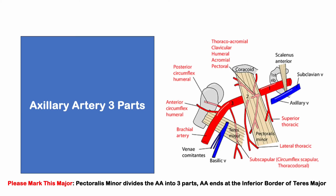The axillary artery has three parts — from the lateral border of scalenus anterior to the medial border of pectoralis minor is the first part. The second part is below pectoralis minor, and the third part arises from the lateral border of pectoralis minor to the lower part of teres major, continuing as the brachial artery. Pectoralis minor divides the axillary artery into three parts — the first part gives one branch, the second part gives two branches, and the third part gives three branches.